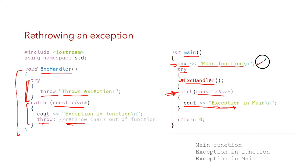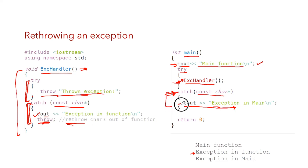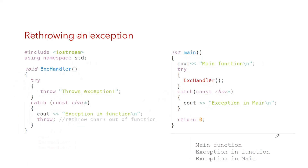The output of this program is: first 'main function' is printed, then from the function call the inner catch block executes and prints 'exception in function', and because of the re-throw the catch block in main is executed and prints 'exception in main'. This is how we can re-throw an exception.